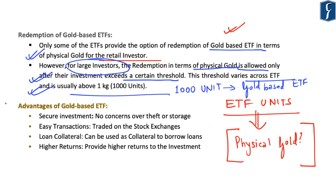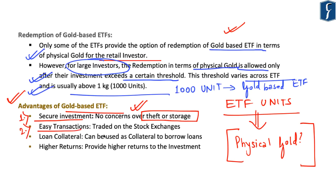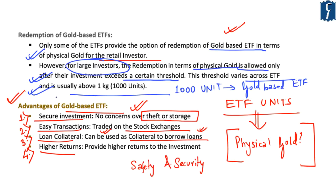There are definite advantages to buying gold-based ETF. First, it is a very secure investment with no concerns about theft or storing physical gold. Second, it is easily transactable as it can be traded on stock exchanges. Third, it can be used as collateral for borrowing money or taking loans. Fourth, it gives higher returns compared to other investments due to the safety and security of gold itself.